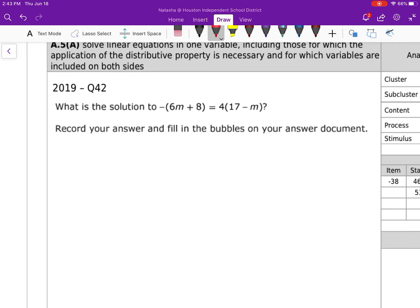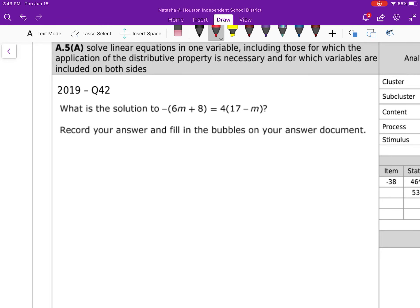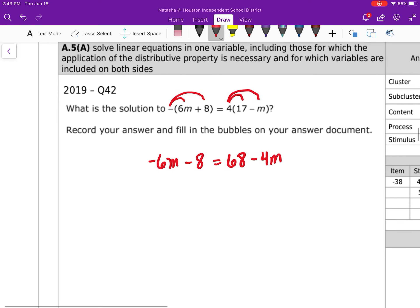Next question is the same way. All we're doing is we're solving for M. Be careful, that's a negative 1. So I need to distribute that negative 1 to both terms. So this becomes negative 6M minus 8. It's equal to, I need to distribute that 4. So 4 times 17 is 68. And then 4 times M becomes minus 4M.